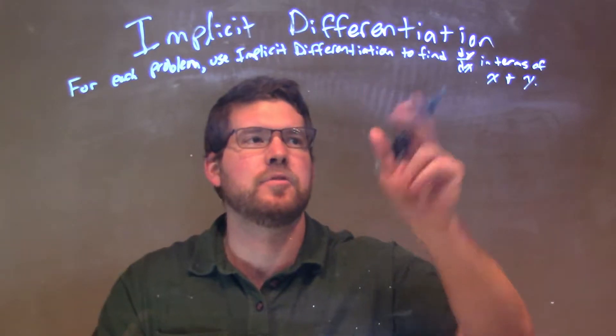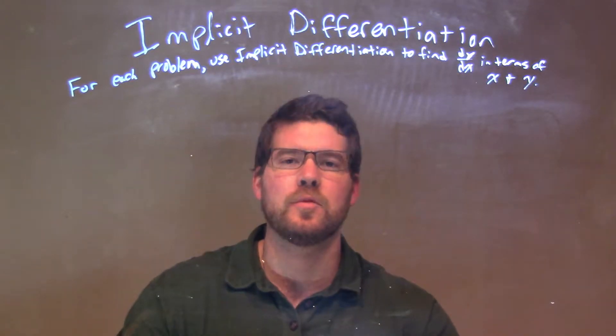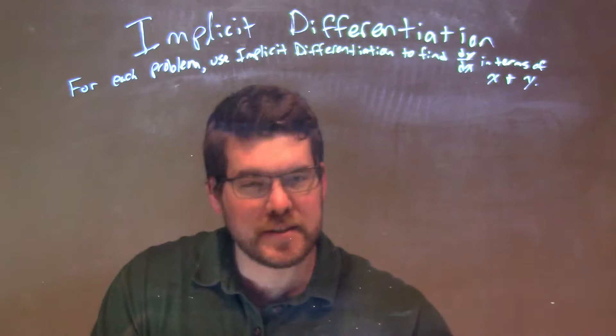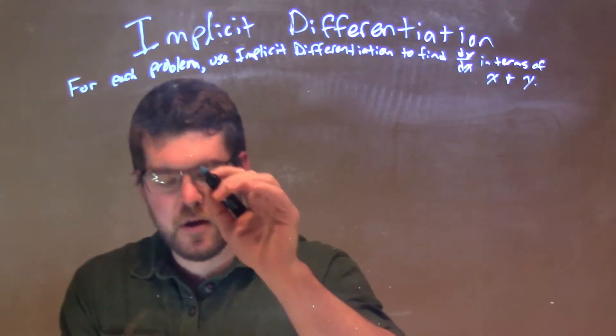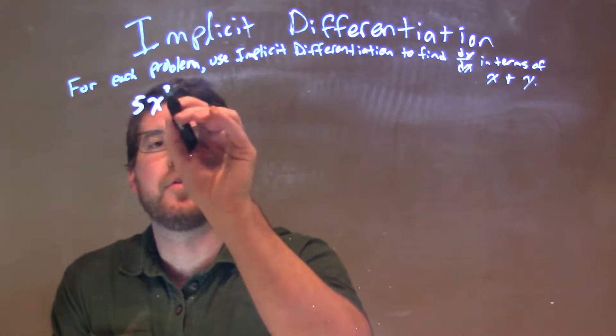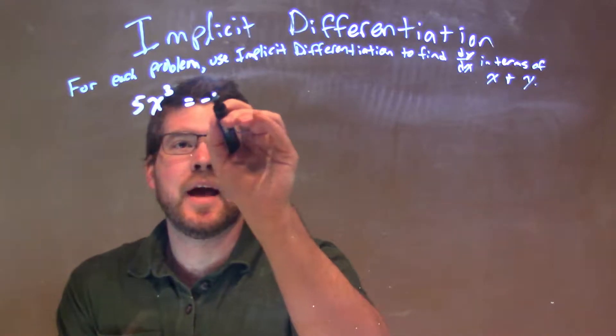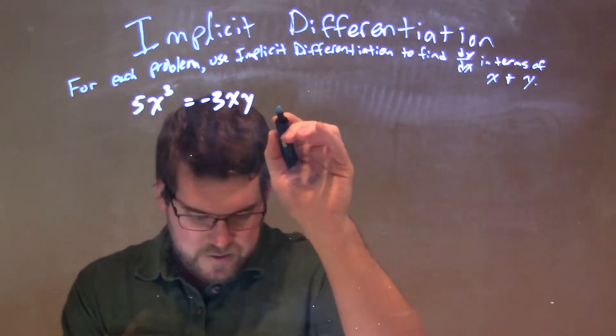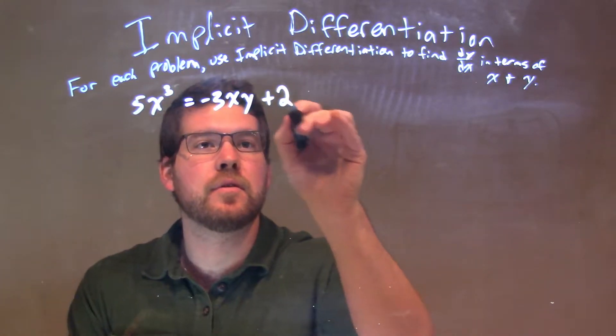And for each problem, we're going to use implicit differentiation to find dy/dx in terms of x and y. So, if I was given this problem, 5x to the third equals negative 3xy plus 2.